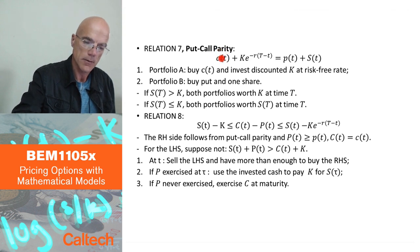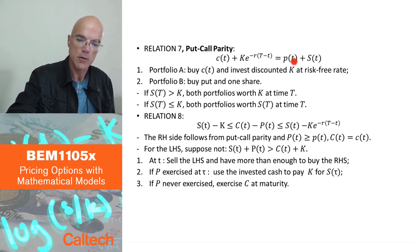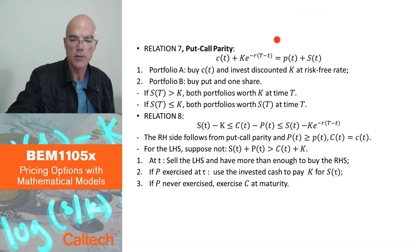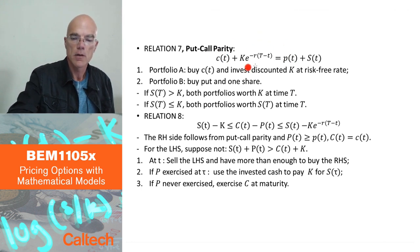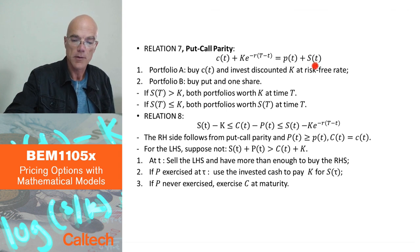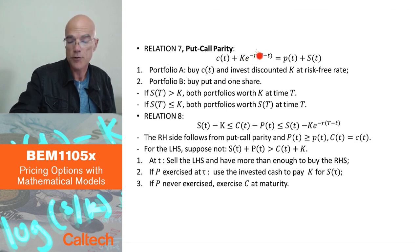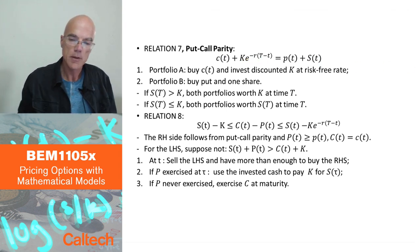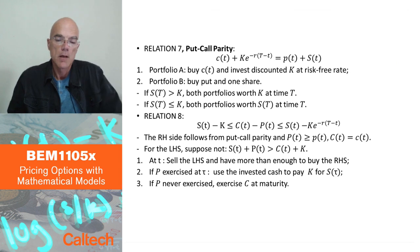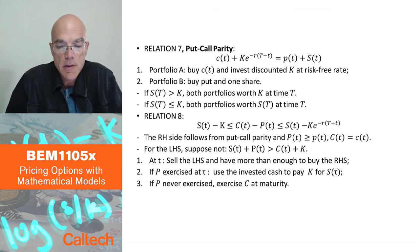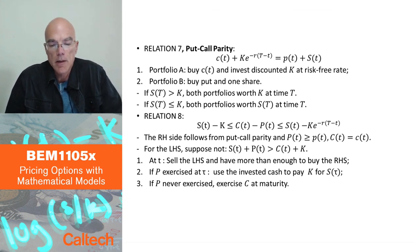If I know the price of the call, then I can compute the price of the put, and the other way around — if I know the price of the put, I can compute the price of the call, simply by looking up the price of the underlying and computing the discounted strike price. So they have to be the same theoretically.